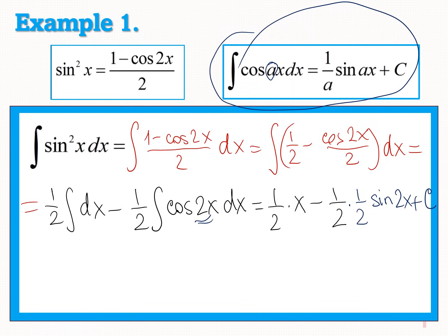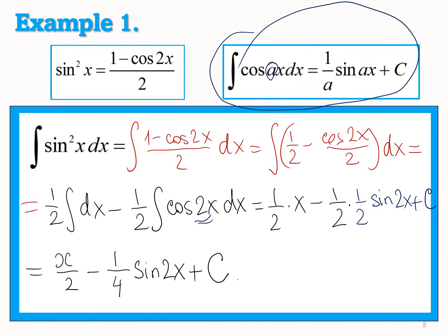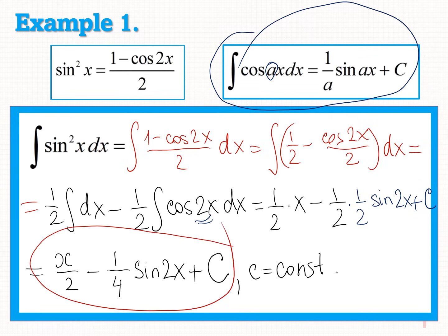We can simplify a little bit. The final answer is x/2 minus (1/4)sin2x plus arbitrary constant C. This is the answer for our first example.